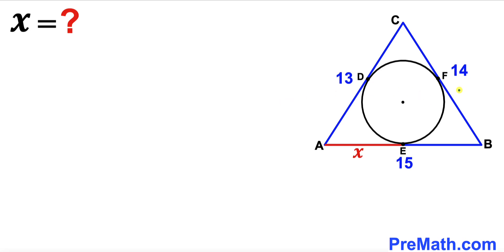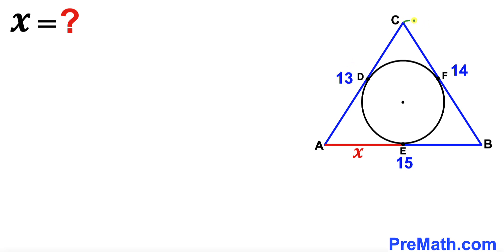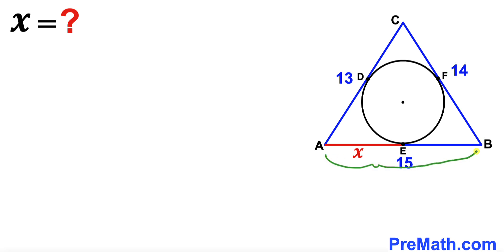Welcome to PreMath. In this video we have got a scalene triangle ABC circumscribing a circle, such that points D, E, and F are the points of tangency. The side length AC is 13 units, BC is 14 units, and AB is 15 units. Furthermore, segment AE is represented by X, and our task is to find the value of X.